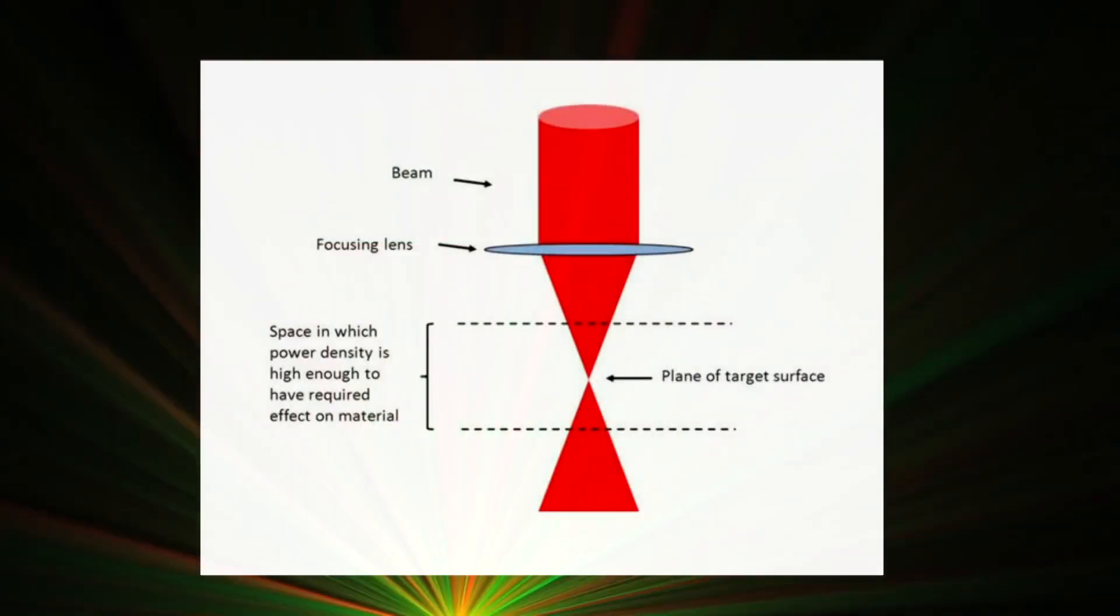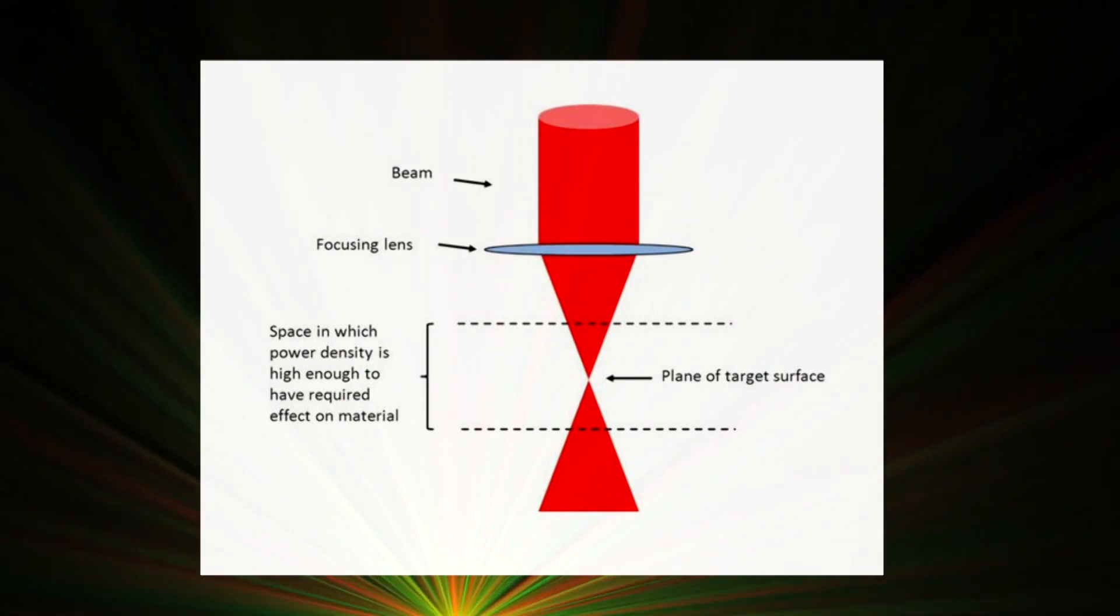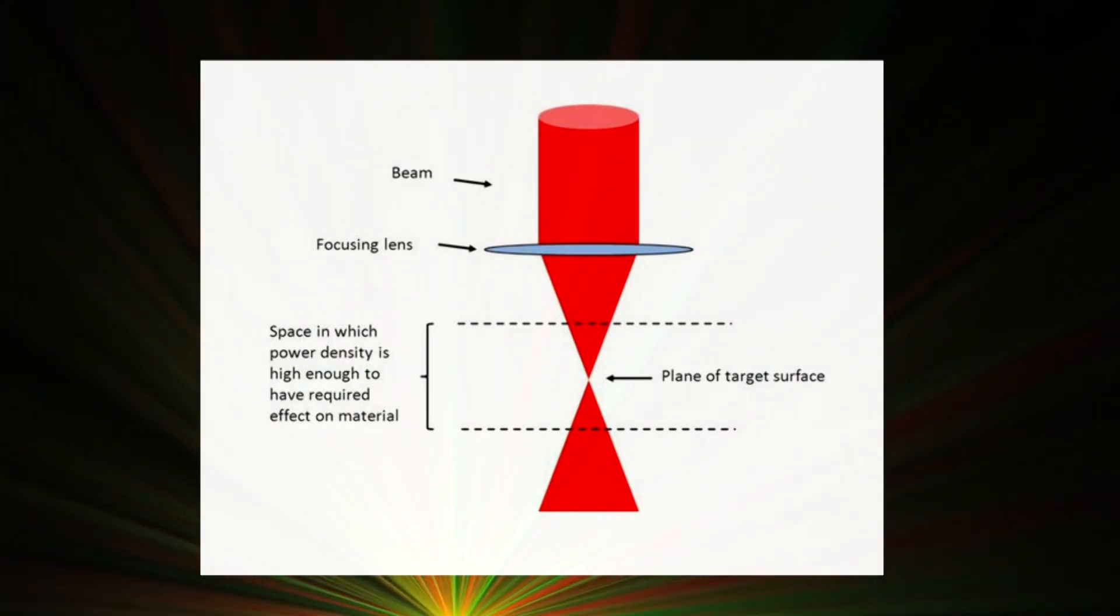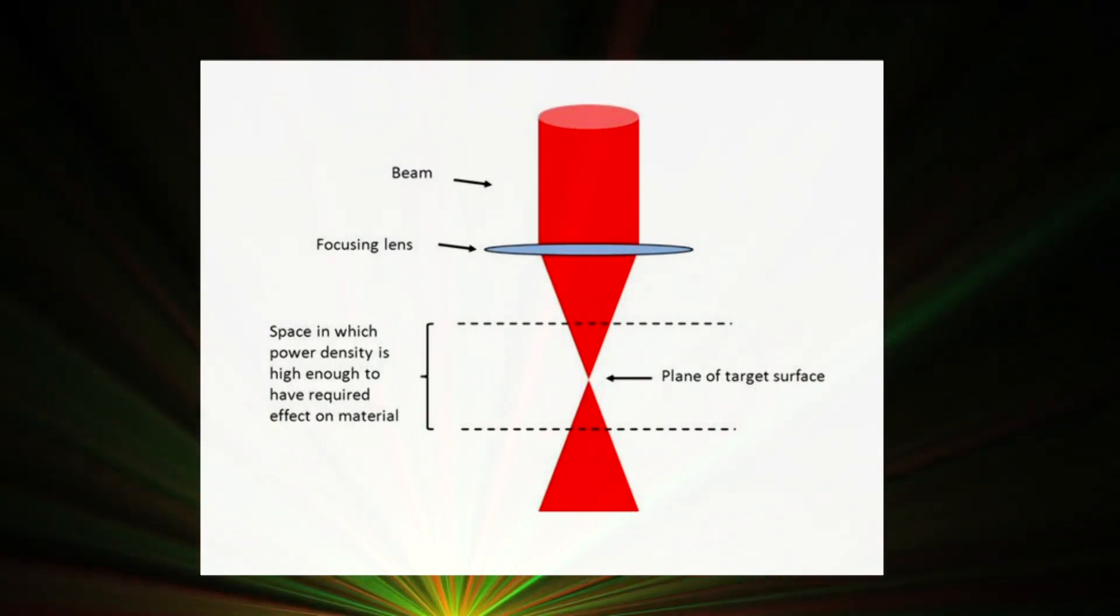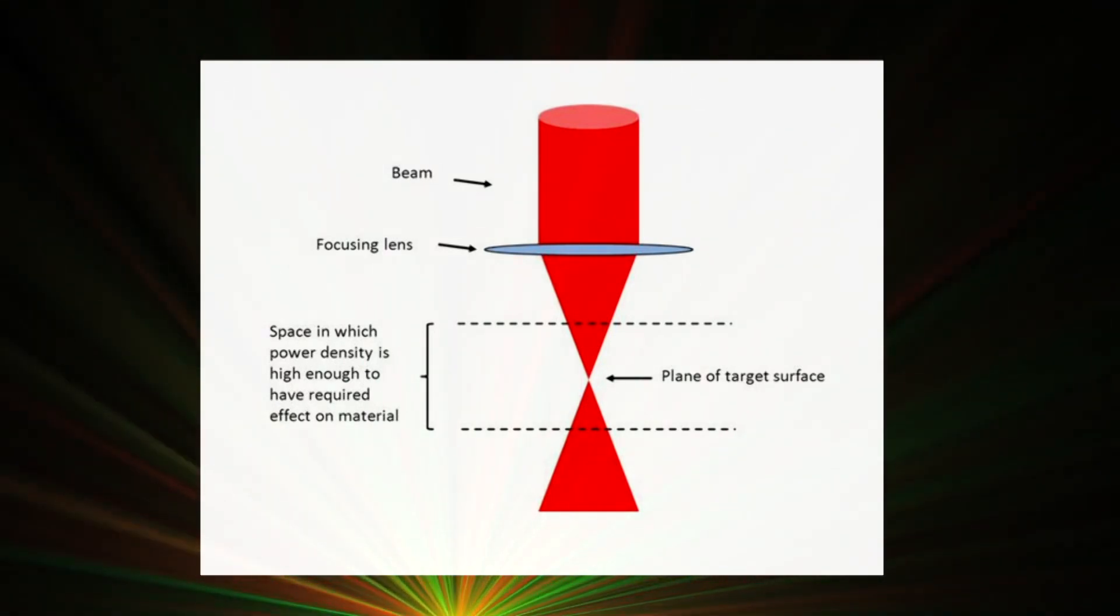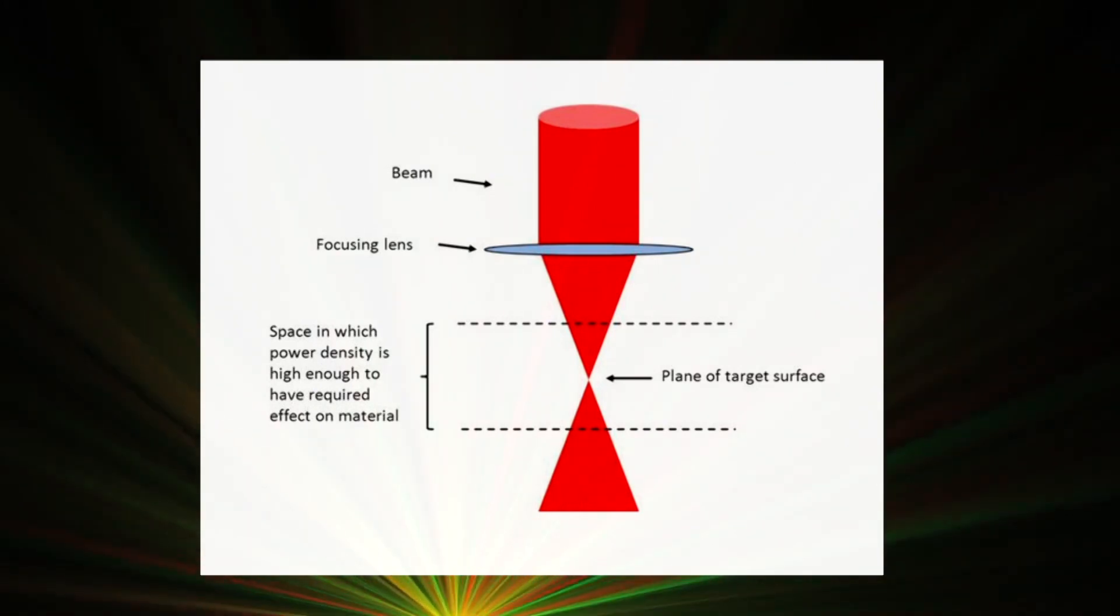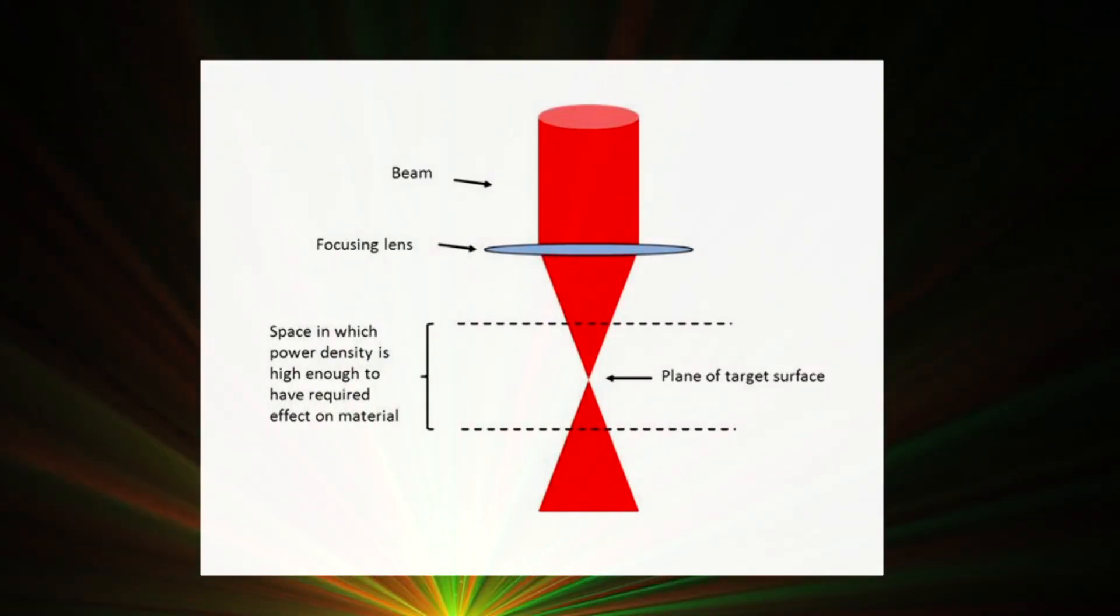In very general terms, a given process is designed to bring the beam to a specific power density in a precisely controlled location. That means that any change in either power or beam geometry at the target location can affect the process.